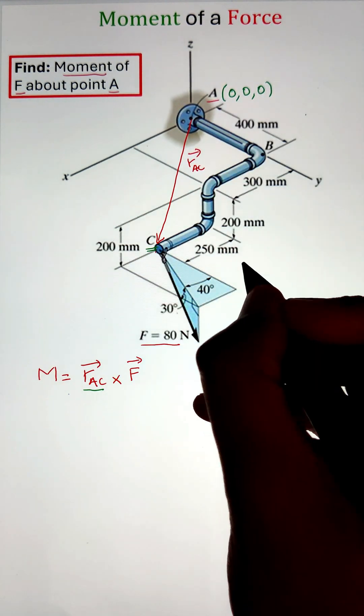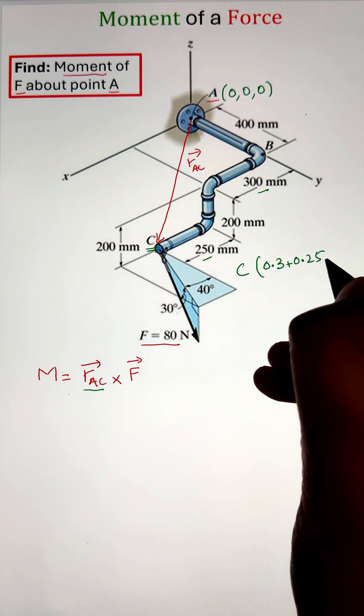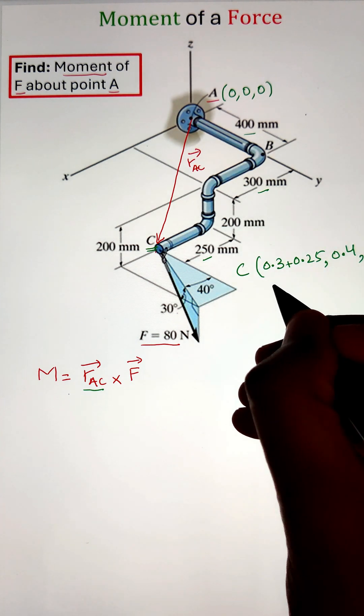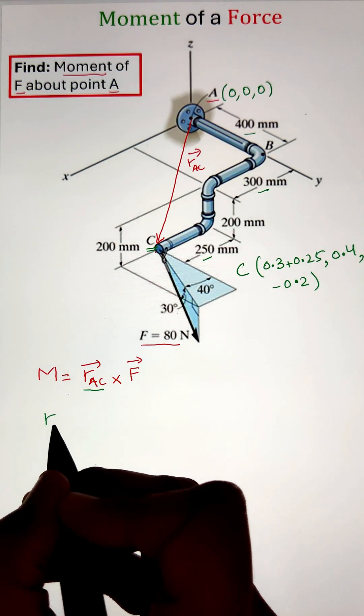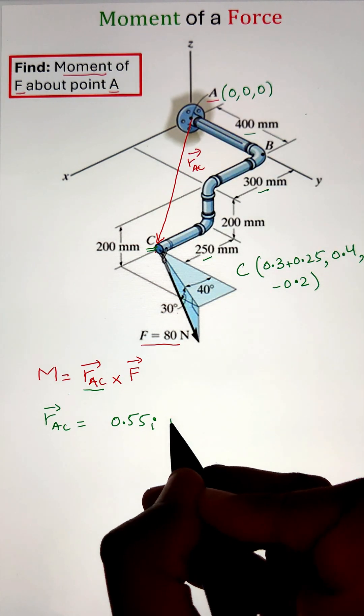Here, the position vector is RAC, which we can write by taking the difference between the point coordinates of C and A, which is coming 0.55i plus 0.4j and negative 0.2k in meters.